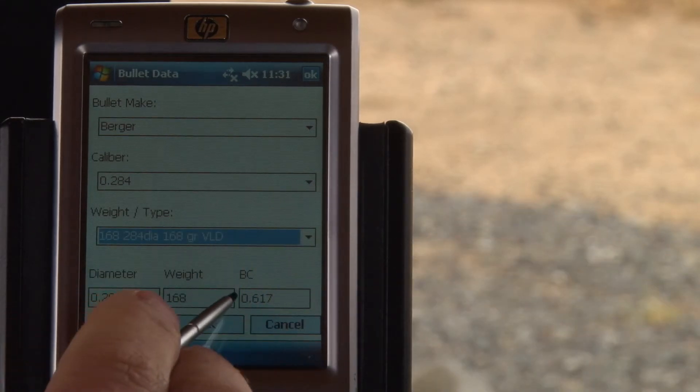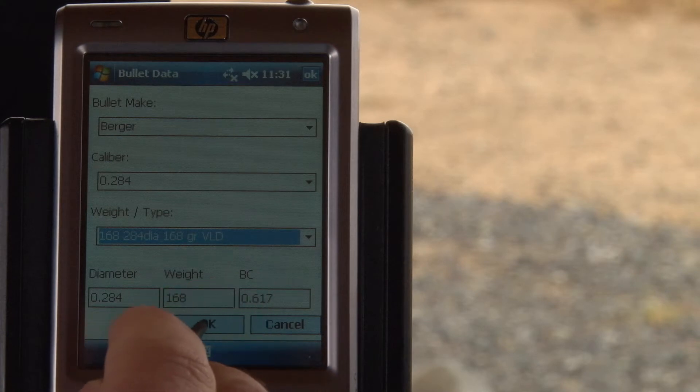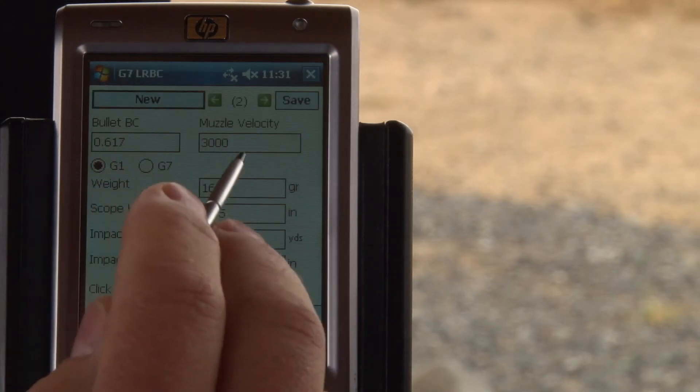And that gives us our diameter, weight, and our ballistic coefficient. Now if we select that OK, that will populate our bullet BC field.